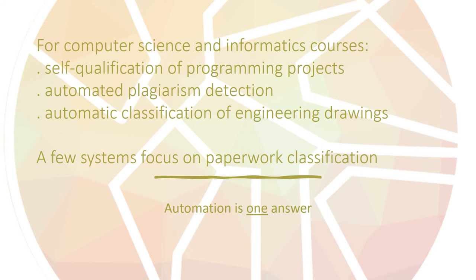For computer science and informatics courses, the focus has been on the self-qualification of programming projects as well as automated plagiarism detection. For general engineering courses, new efforts include automatic classification of engineering drawings. For classification of essays and other student writing, there is software such as Canvas SpeedGrader for entirely manual scoring, and both research and self-classification systems have been in existence for more than a decade. However, there are only a few systems focused on the classification of paperwork.